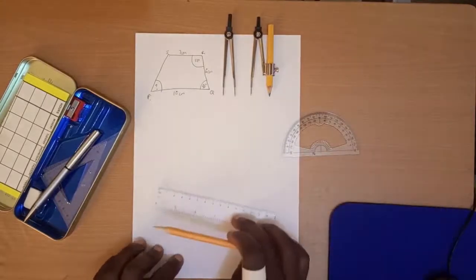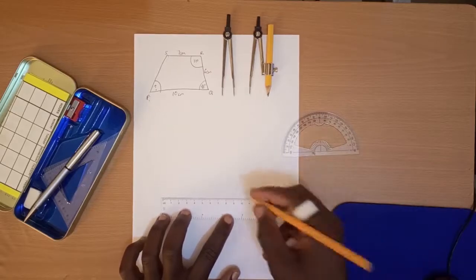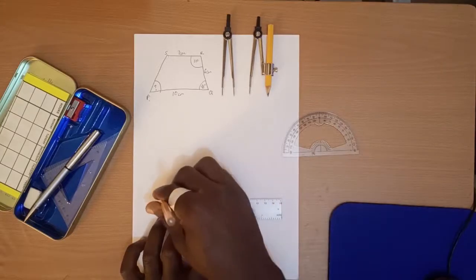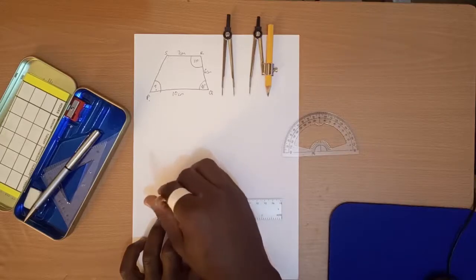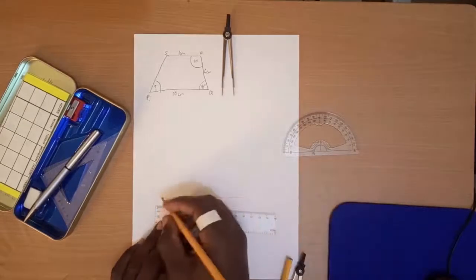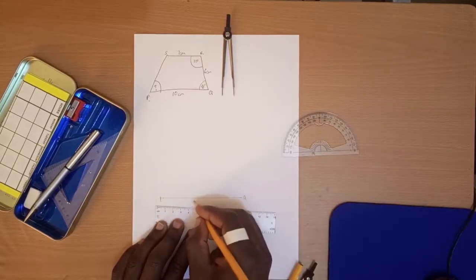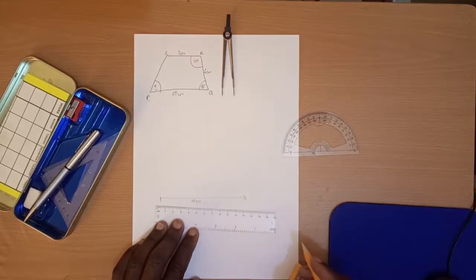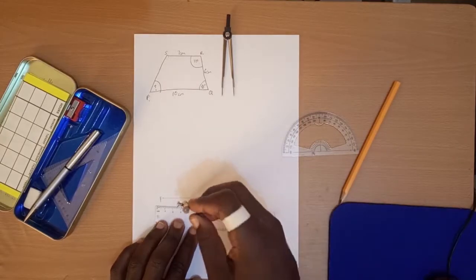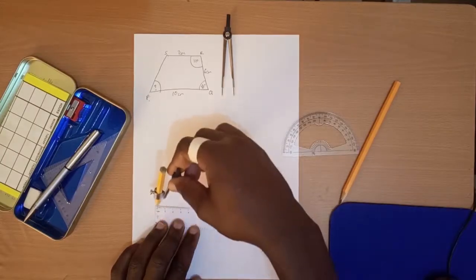We know that PQ is 10 centimeters. So let's do our 10 centimeters. We label PQ. Our R is going to be formed somewhere there. We are told it's 6 centimeters, so let's measure our compass to 6 centimeters. That's 6 centimeters.